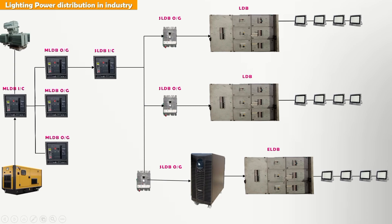How are LDB and ELDB segregated? Generally, the workplace has many light fittings to maintain the required lux level — inspection areas require different lux levels. During an emergency, not all lights are needed; only basic lighting is required. For example, if 10 lights are connected in an area, during emergency only 3 to 4 lights need to be on. Those 3 to 4 lights are connected through the UPS — that is called ELDB.